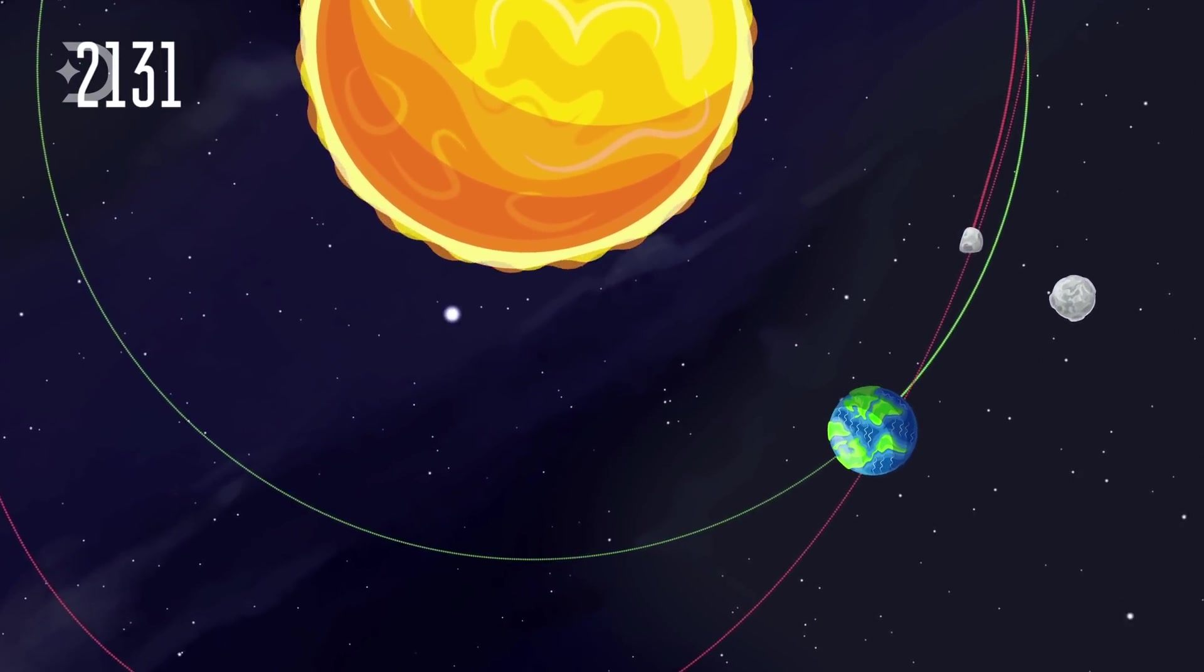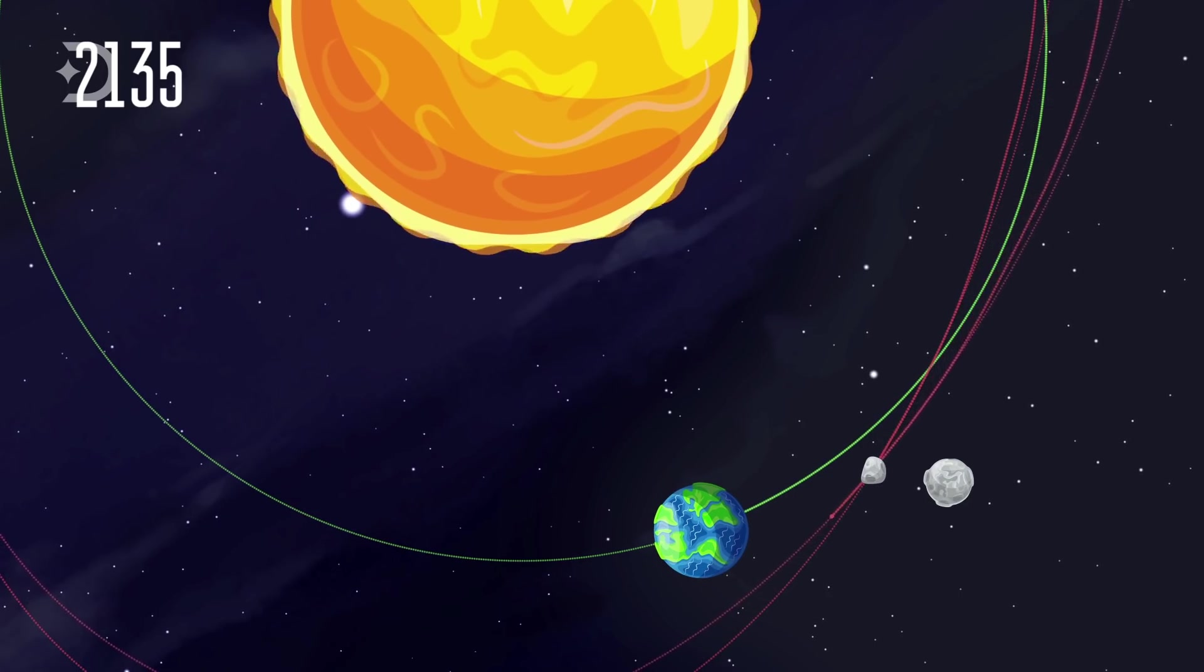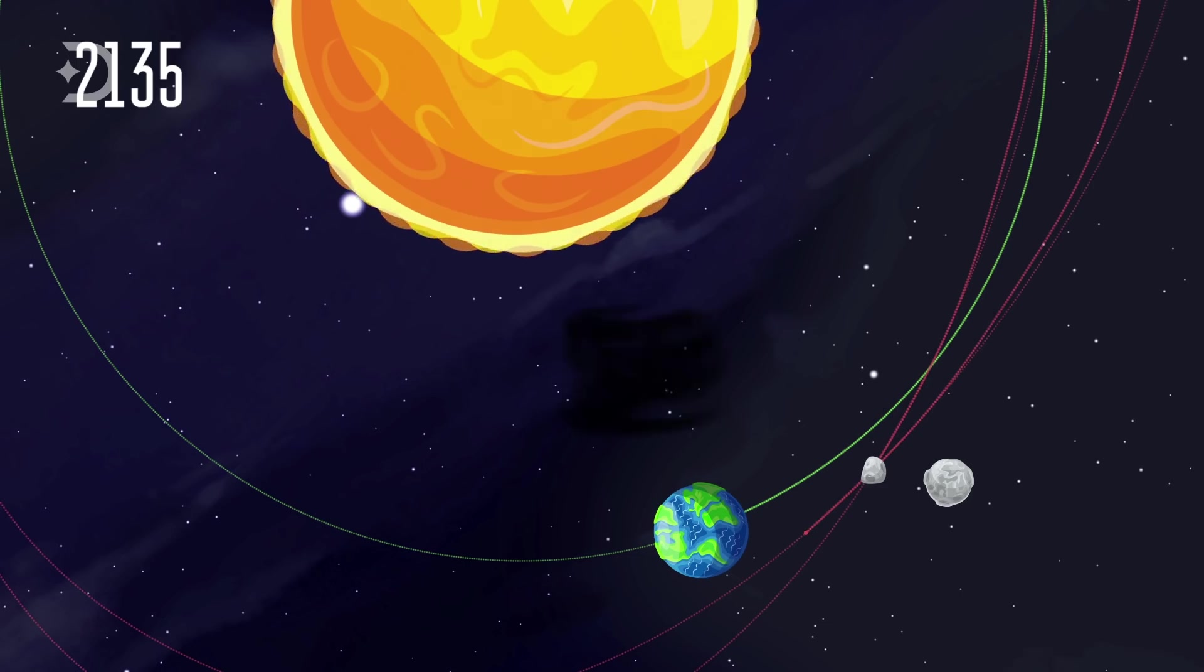If Bennu enters a keyhole between the Earth and the Moon, it is possible its orbit could shift so that it would likely hit the Earth on a subsequent approach.